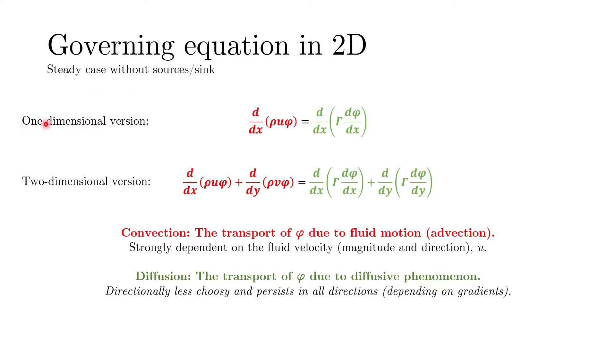The one-dimensional convection diffusion equation has the convection term d/dx(ρuφ) on the left-hand side, where u is the x-velocity and φ can be any variable of interest — scalar or vector component. On the right-hand side we have the diffusive term with gamma as the diffusivity. In 2D, the velocity vector has two components: u in the x-direction and v in the vertical direction — common fluid mechanics nomenclature. So in the 2D version we have the 1D convection term plus an extra term d/dy(ρvφ) accounting for the vertical velocity, and diffusion now occurs in both x and y directions.